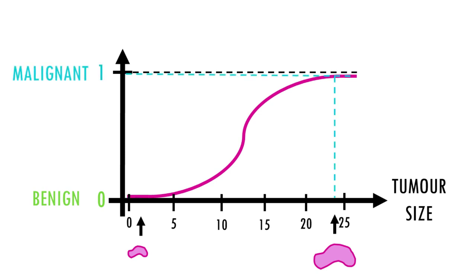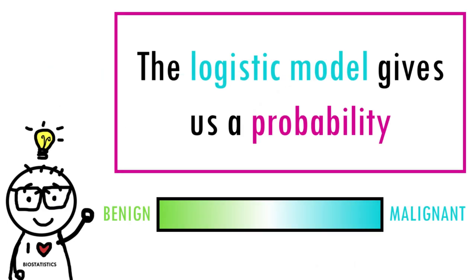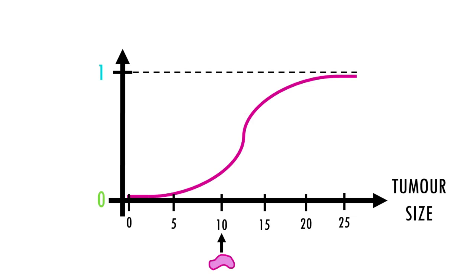But wait a minute, if 0 is malignant and 1 is benign, what does an intermediate value of 0.4 or 0.8 mean? This is the key about logistic regression. It's basically giving you the probability that the tumor is benign or malignant. The closer to 0, the more probable the tumor is benign. The closer to 1, the more likely the tumor is malignant.